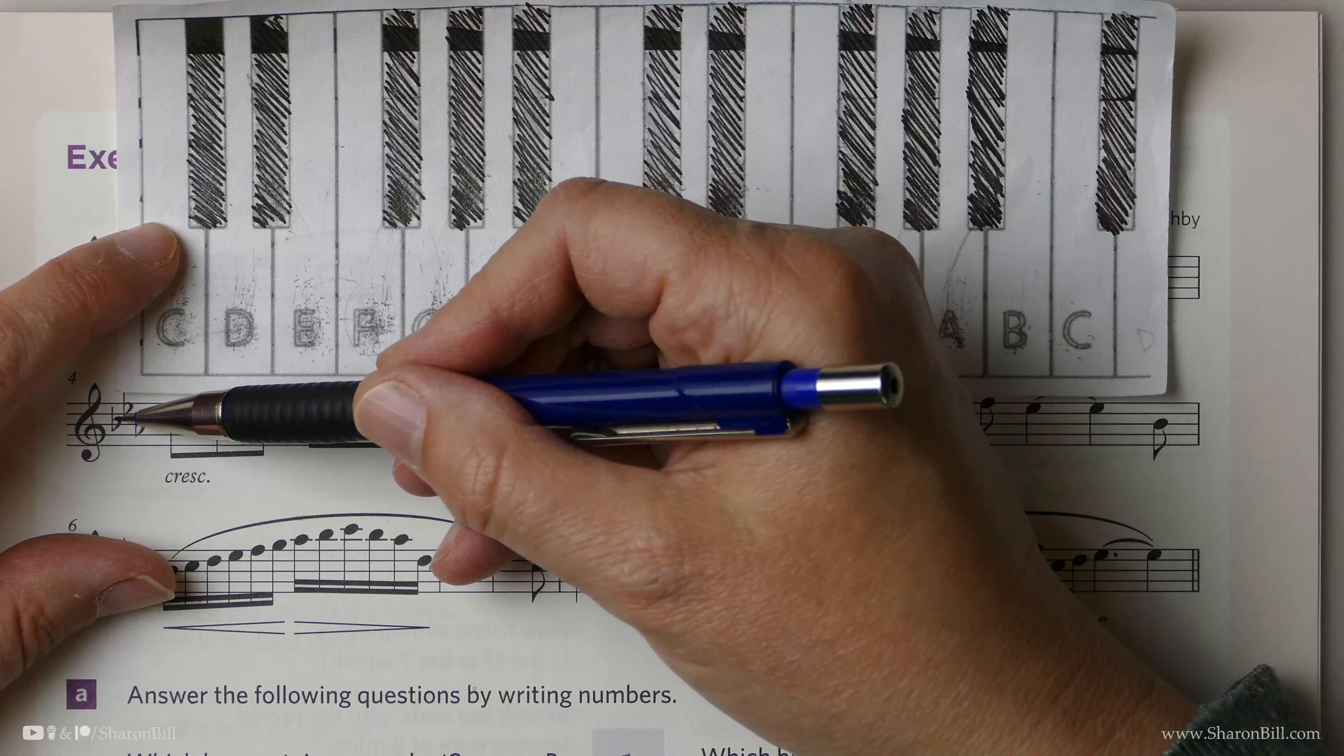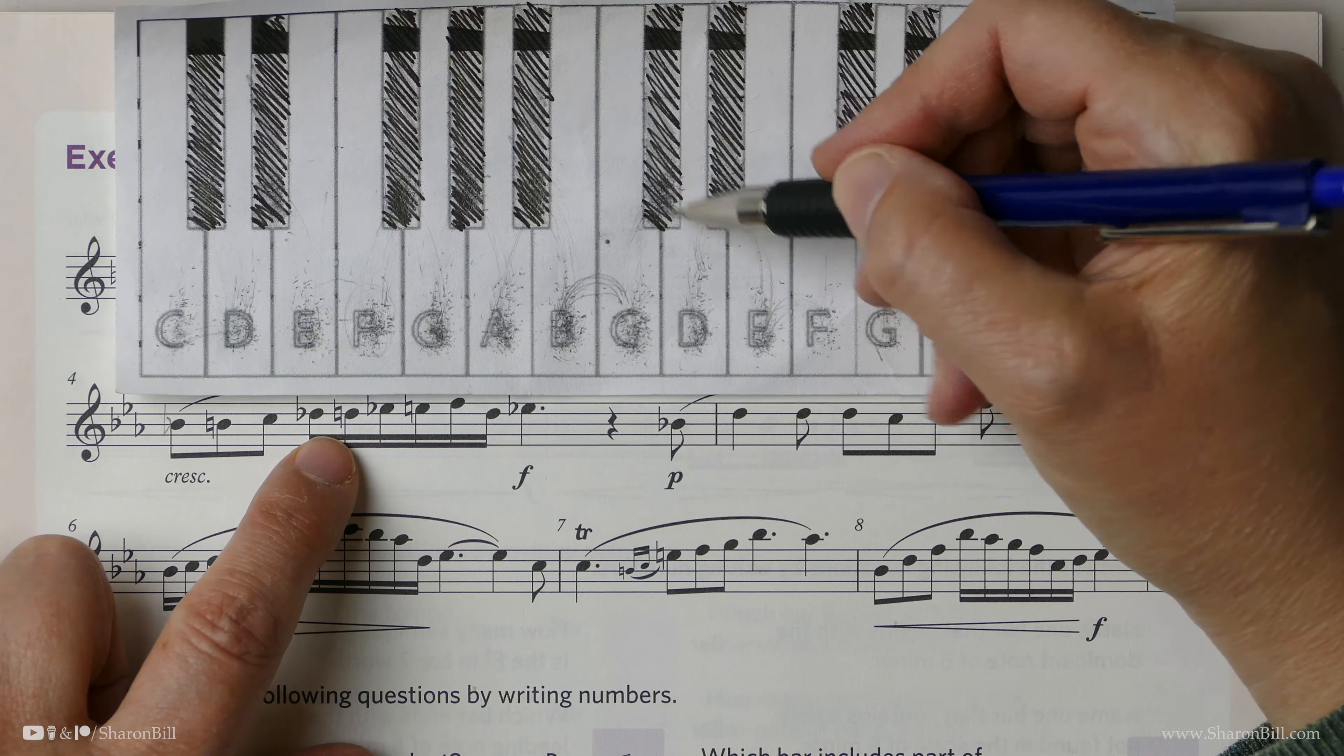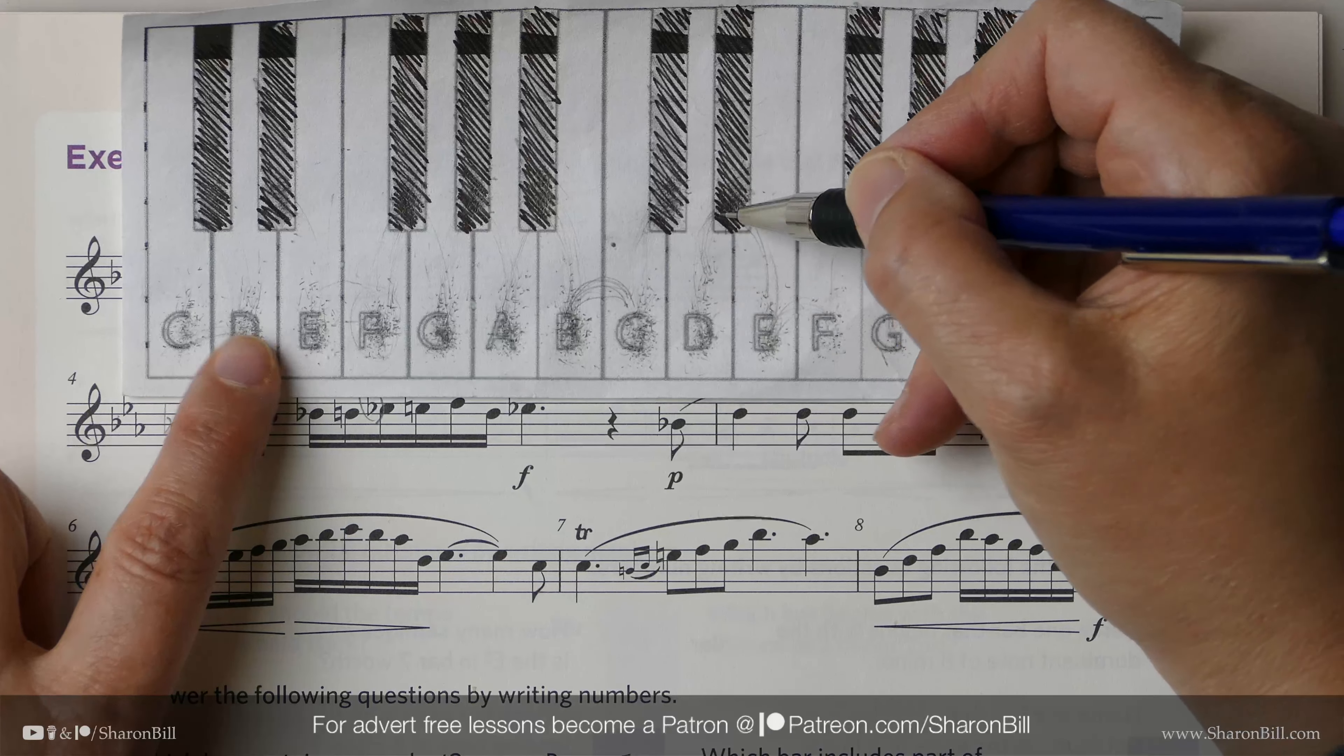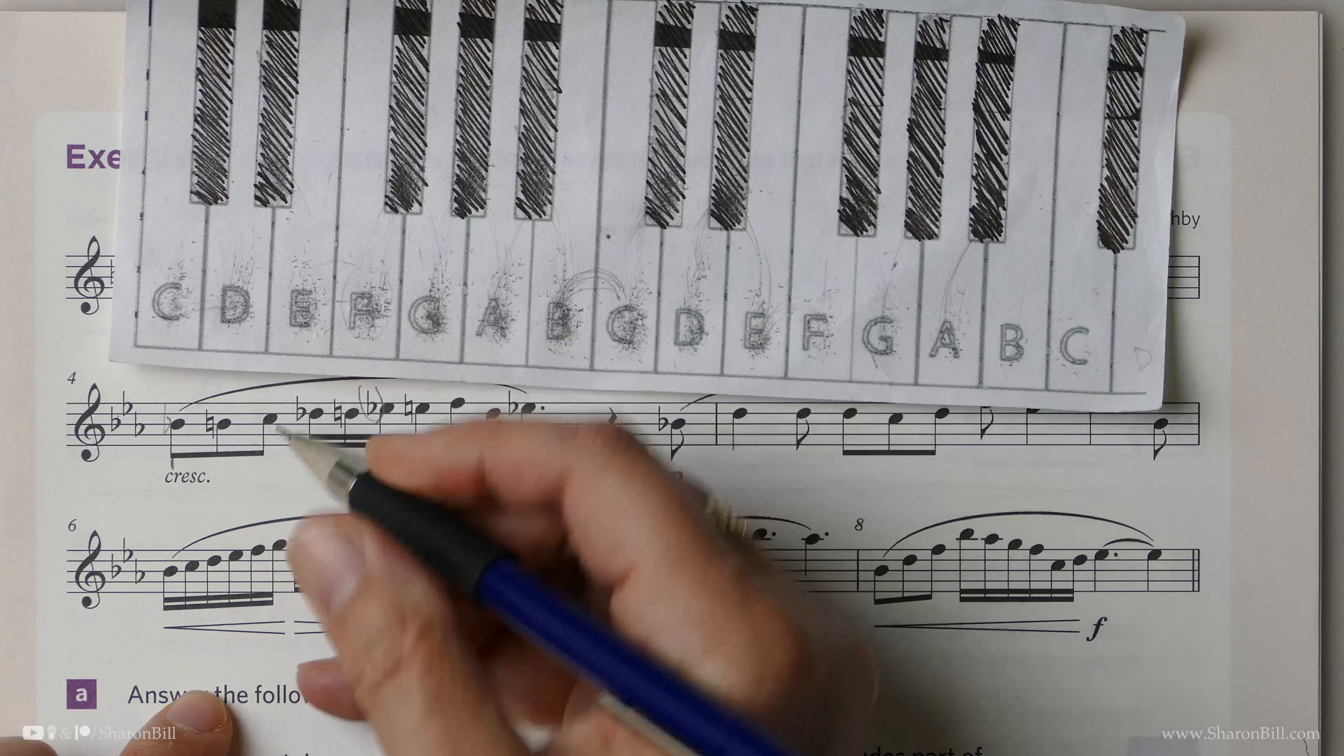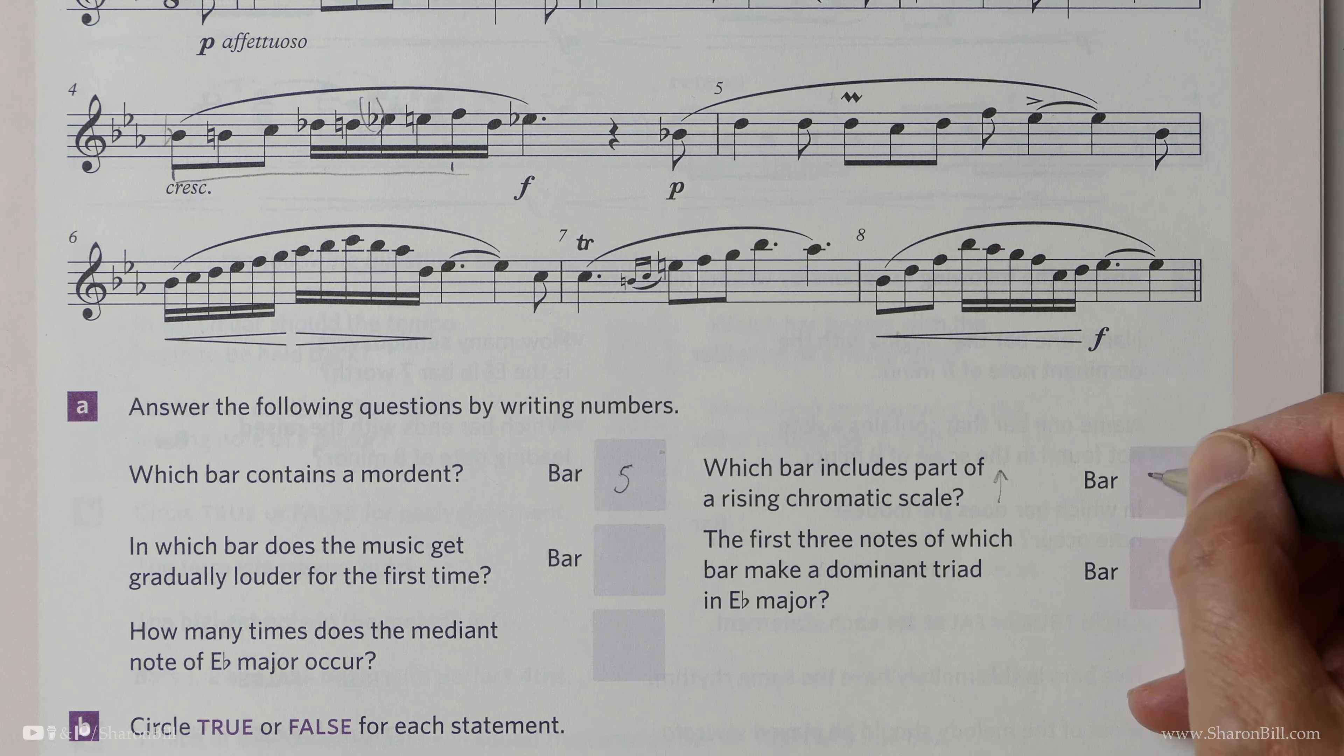Let's see what we've got here. Now do bear in mind we've got a key signature of B-flat, E-flat, A-flat. So that is already a B-flat. Then we get a B-natural. Then we get a C. Then we get a D-flat. Then we get a D. Then we get an E-flat, which actually we don't really need because the key signature does that for us. Then we get an E-natural. And then we get an F. So actually from here to here is a rising chromatic scale. And so that tells us what we're looking for. So there, bar four.